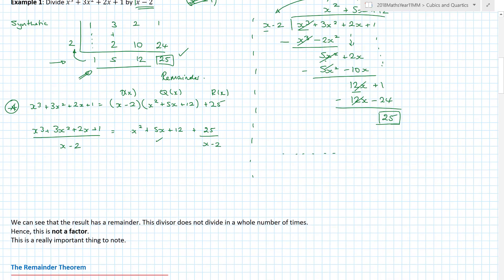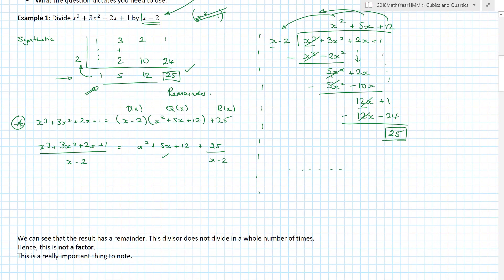What we noticed in above is that actually doing that division, we have a remainder. The remainder was 25. Because this divisor does not go in a whole number of times, it's not a factor. If I look at the number 36, what are the factors of 36? We're looking at the numbers that divide in a whole number of times: 1, 2, 3, 4, 6, 9, 12, 18, and 36. All of these divide into 36 with no remainder. Hence, they're called a factor. Because we've got this remainder of 25, then we can say quite specifically that x minus 2 is not a factor.